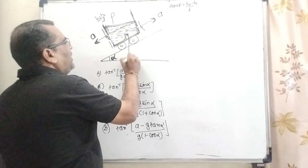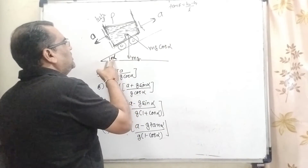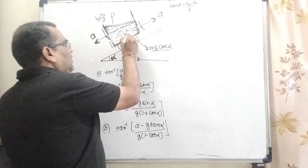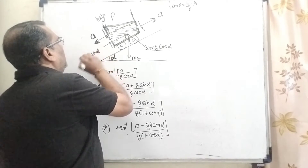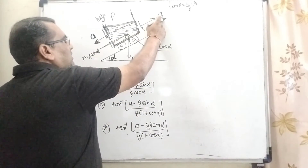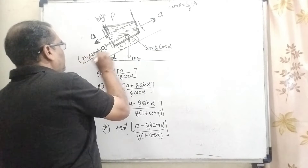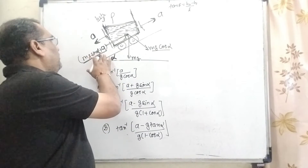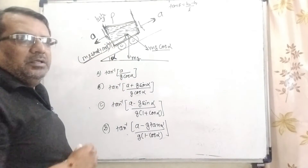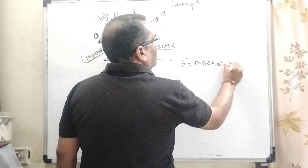Now, if we see, mg is acting in the downward direction. Since the incline makes angle alpha, mg cos alpha acts perpendicular to the incline surface and mg sin alpha acts along the incline. So we have resolved two components of the weight of the liquid. Since acceleration is acting in the upper direction, pseudo acceleration is also acting. So the effective force along the incline is mg sin alpha plus ma.